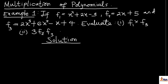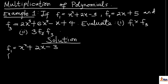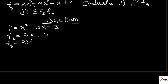We have an example here. We are told that f1, f2, and f3 — they are giving us functions. Any time we see f1, f2, or f3, they are just telling us that we have functions of f. f1 is equal to x squared plus 2x minus 3. Then f2 is 2x plus 5, and f3 is 2x cubed plus 6x squared minus x plus 4. We are asked to evaluate f1 times f3, and then f2 times f3.